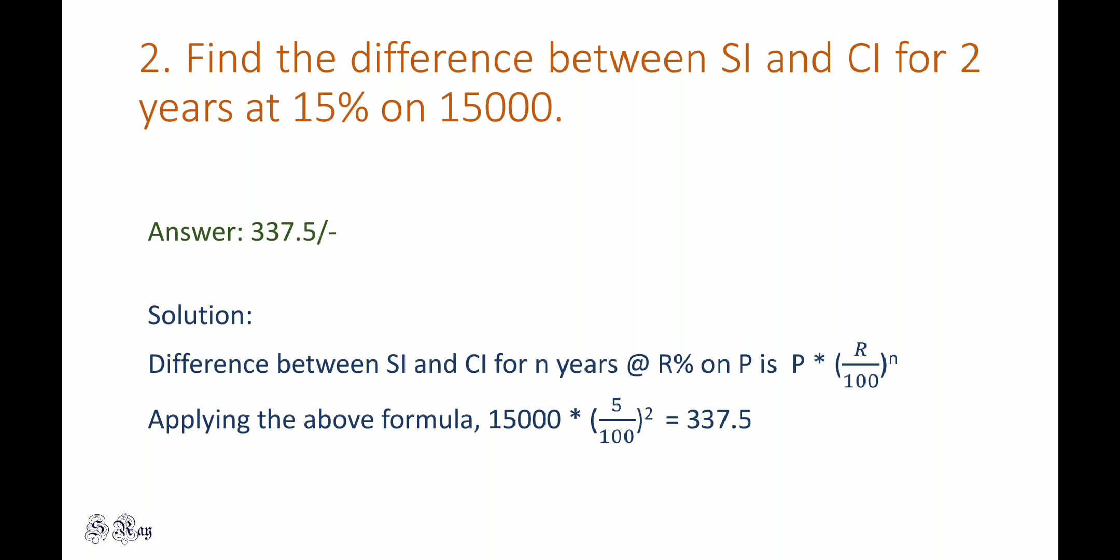When you solve 15,000 times (15/100) squared, the answer is 337.5. Don't forget this formula: P times (R/100) to the power n gives the difference between simple interest and compound interest for n years at R percent per annum.